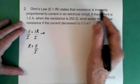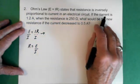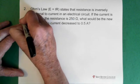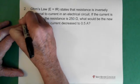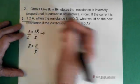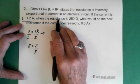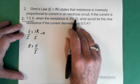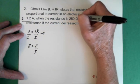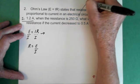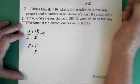So let's take a look at what we have here. If the current is 1.2 amps, so this is basically our current 1, I1 is 1.2 amps, when the resistance is 250 ohms. So this then is our R1. Okay.